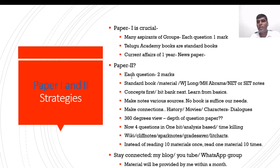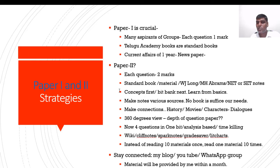For current affairs, going from around last July to the next July is enough. Coming to Paper 2, please purchase standard books. I suggest going through William J. Long's book and M.H. Abrams' Glossary of Literary Terms. The Hariharan book is the best for NET/SET notes, or you can also purchase R.D. Trivedi. There are many publishers in the market.